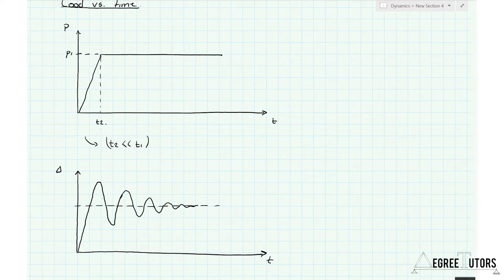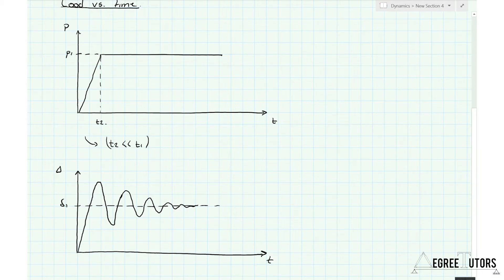If you've studied structural dynamics before, you'll recognize this - it's a sinusoidal, or more specifically an exponentially decaying sinusoidal oscillation. We'll pick out the various parts of this. The first thing we can say is that the response or deflection of the structure goes way past delta one - way past the static deflection - up to some peak value. We can call this the peak dynamic response, and we can see clearly that it's greater than the static response.